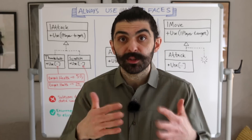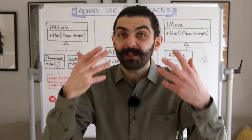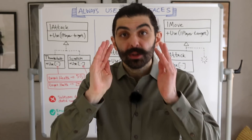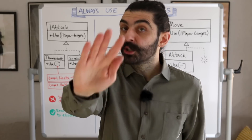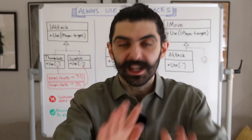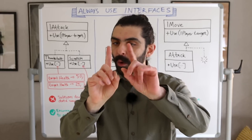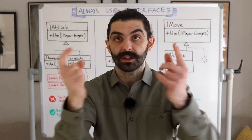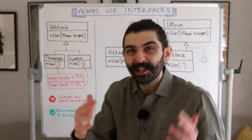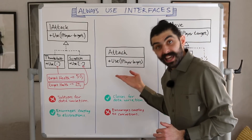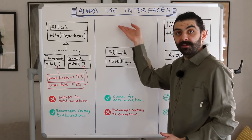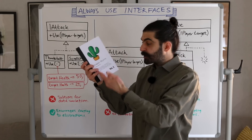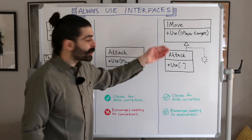When I say that subtypes are not a good solution for capturing variations in data, I don't mean that we should couple to concretions — we should still couple to abstractions. I only mean that if all you have is data variation, you should not capture that as subtypes. But that doesn't mean your class can't have an interface above it. And if you follow the 'always use interfaces' rule of Elegant Objects, then it should.